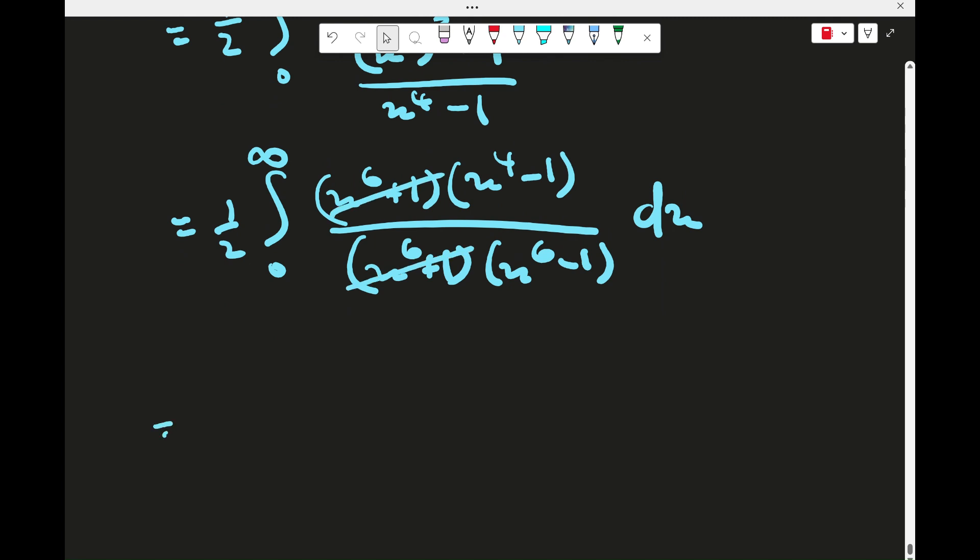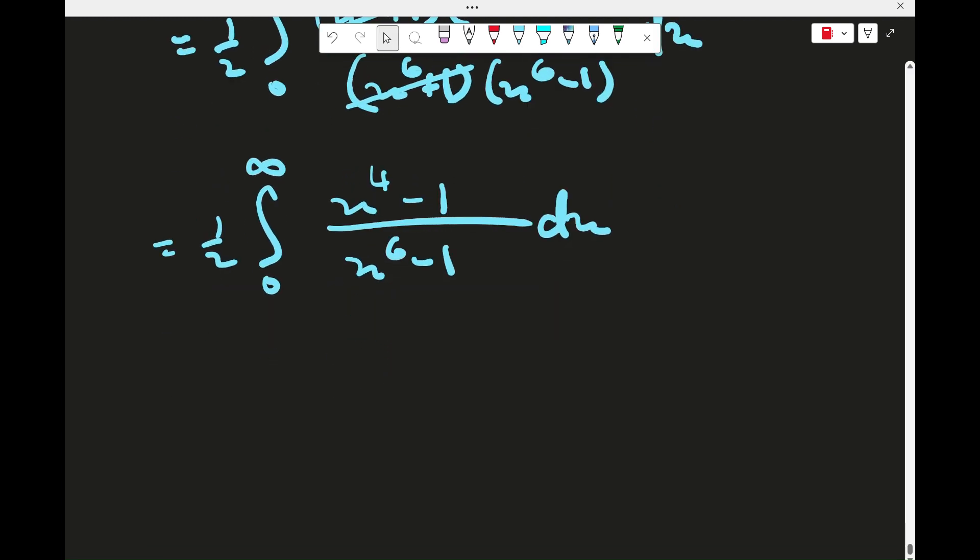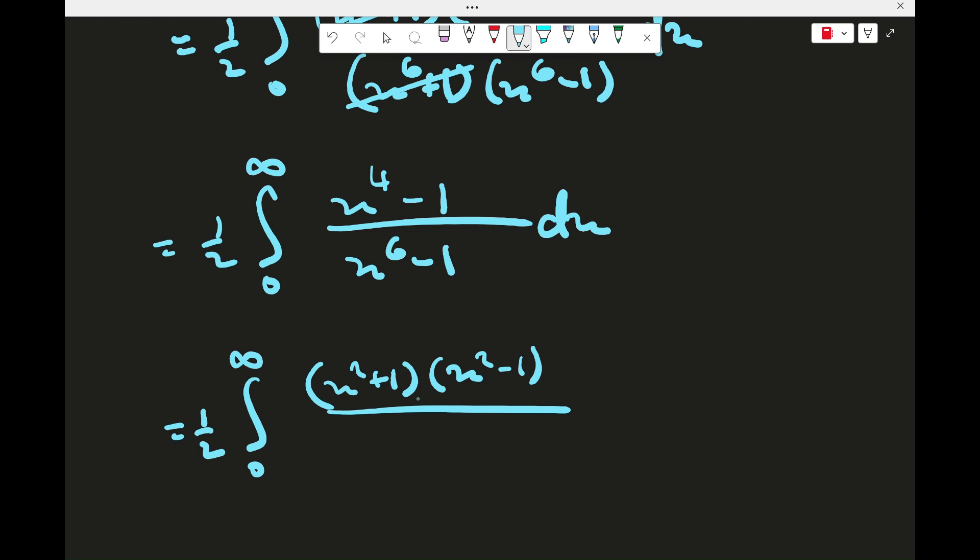Now we can cancel this and that. So then we have x to the 4 minus 1 over x to the 6 minus 1. We can write the top as x squared plus 1, x squared minus 1. And the bottom we can write with a difference of cubes. So this is actually x squared cubed minus 1, right? So that would be x squared minus 1, x to the 4 plus x squared plus 1.